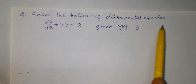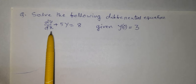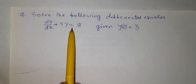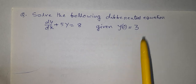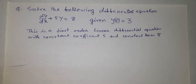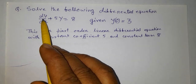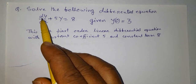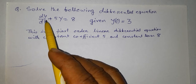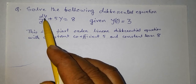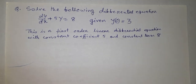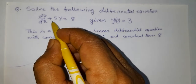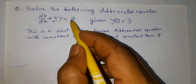Solve the following differential equation dy/dx plus 5 times y equal to 8, given that y(0) is equal to 3. This equation has a first order derivative and the power of this first order derivative term is 1, so this is a first order linear differential equation with constant coefficient 5 and constant term 8.